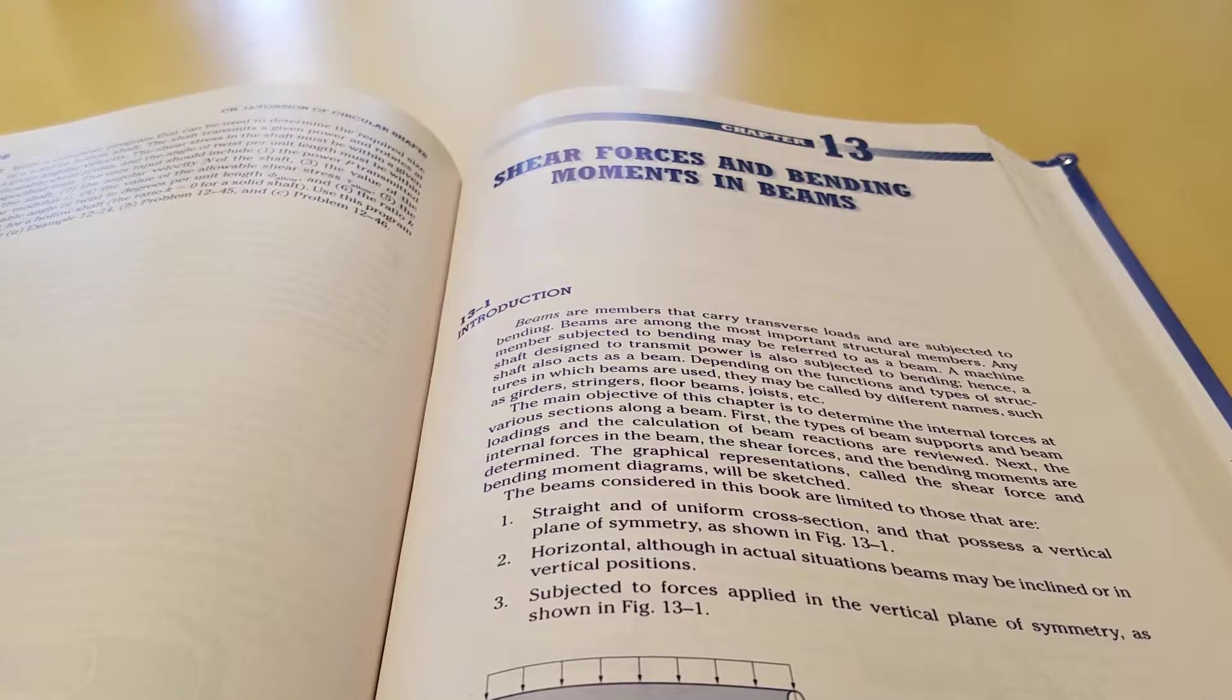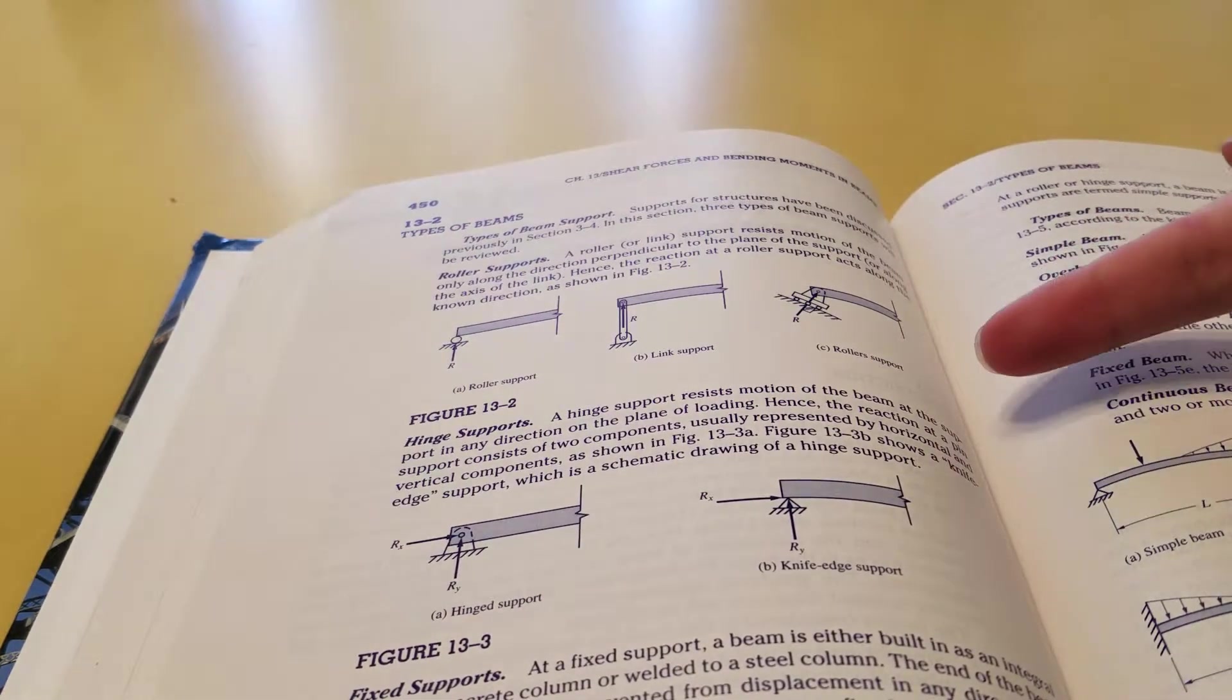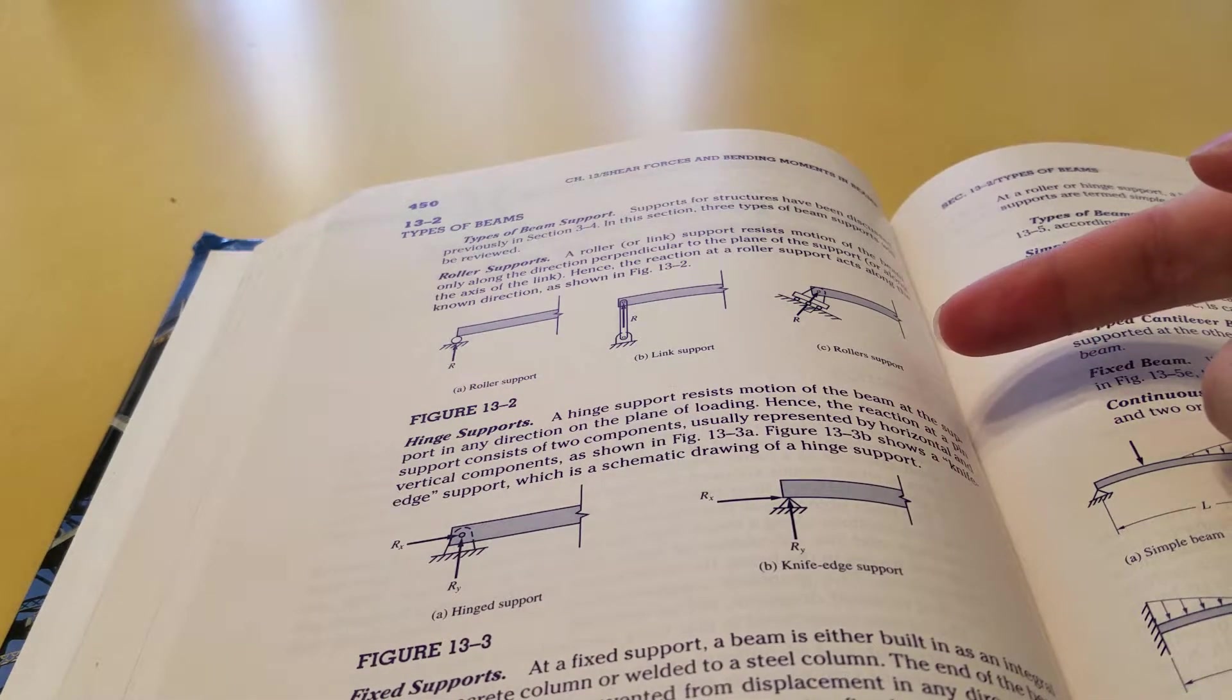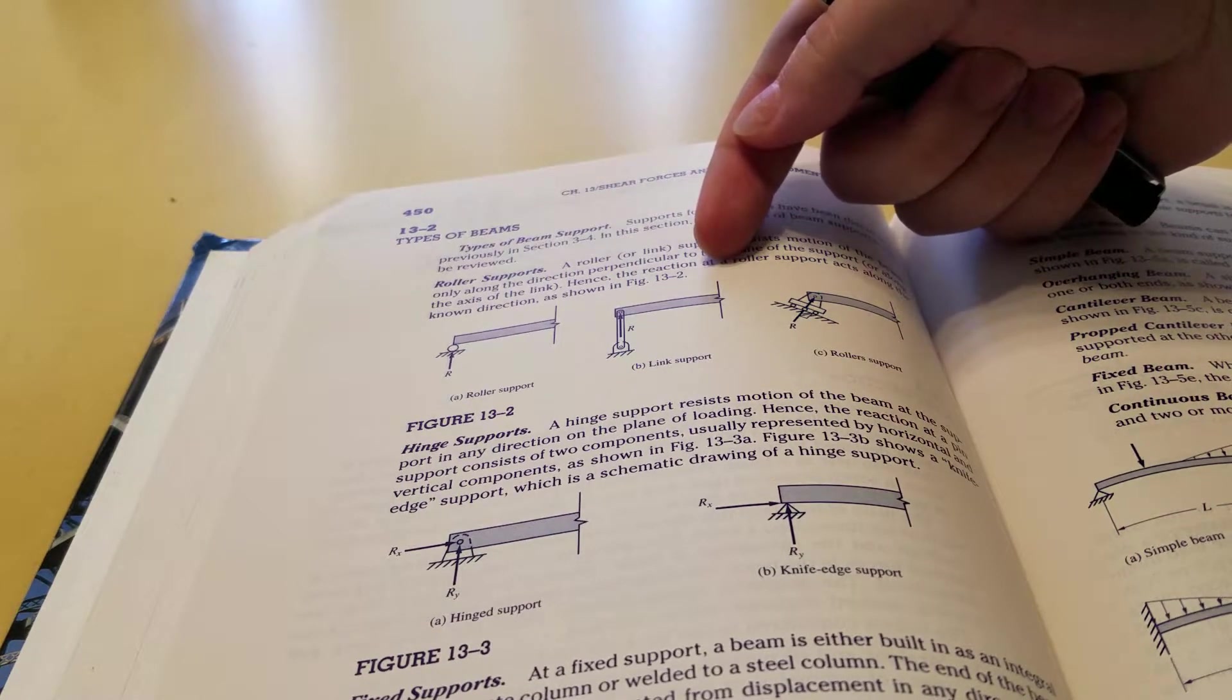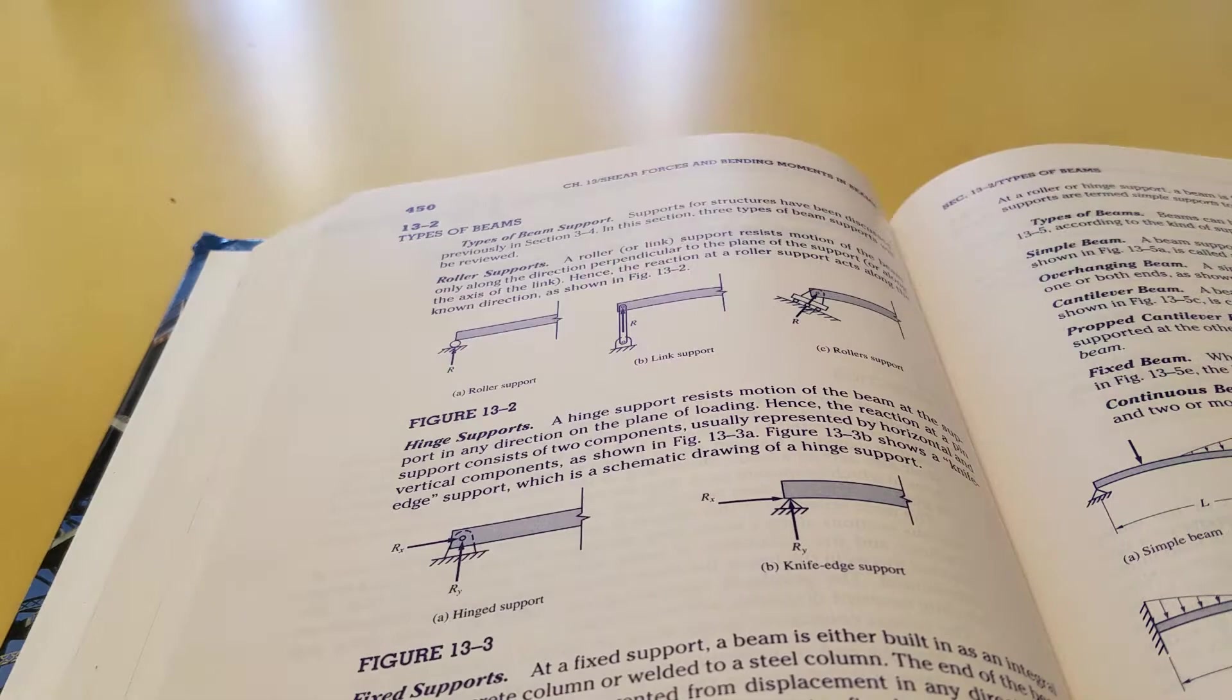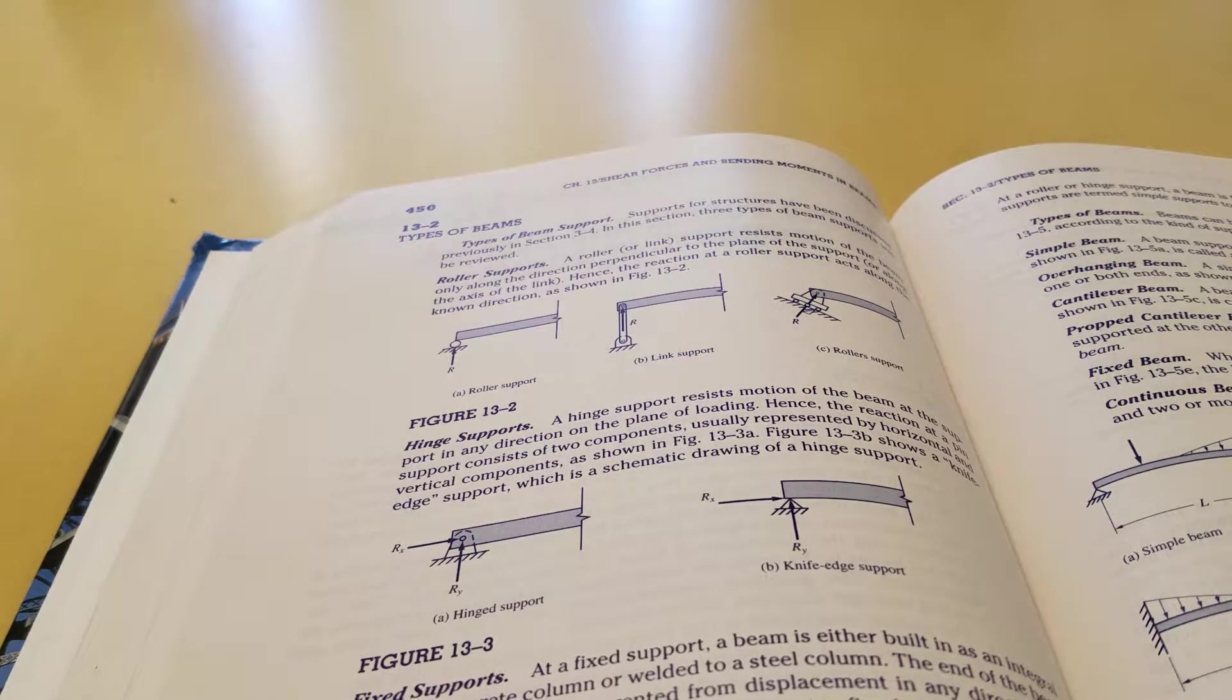I want you to read section 13.1. Section 13.2 is talking about different types of supports. Again, I'm not sure why they felt the need to separate out a link support, but it's basically two hinge joints, so there's only a net force and no moment, and the force is only in one direction.